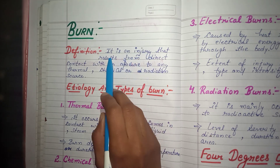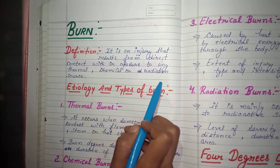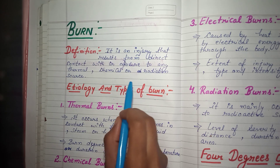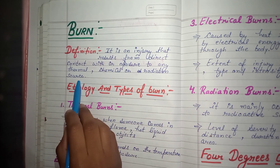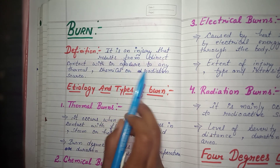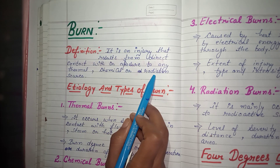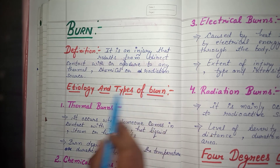A burn is an injury that results from direct contact with or exposure to any thermal, chemical, or radiation source. Thermal means a hot object or hot water — when skin comes into direct contact and injury occurs, that is a burn. It can also result from chemical contact or radiation such as radioactive rays or sun rays.